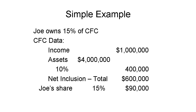Joe owns 15% of a controlled foreign corporation, or CFC. The CFC earns $1 million of profits in 2018 and has no subpart F income. It has tangible depreciable assets of $4 million, 10% of which is $400,000. Joe must include in his income 15% of $600,000 — that is, 15% of the excess of the million-dollar profit over 10% of tangible depreciable assets. Joe's inclusion is $90,000, and it's all ordinary income.